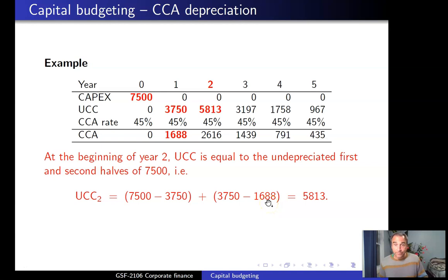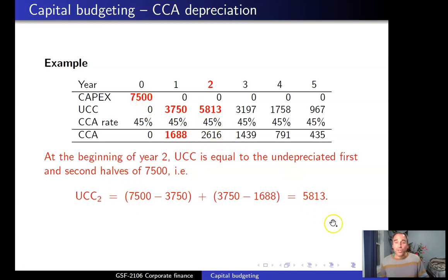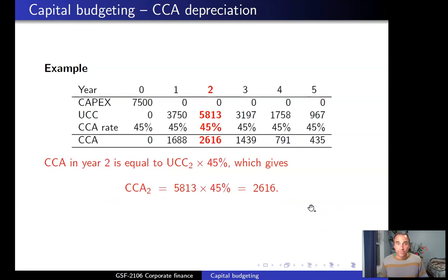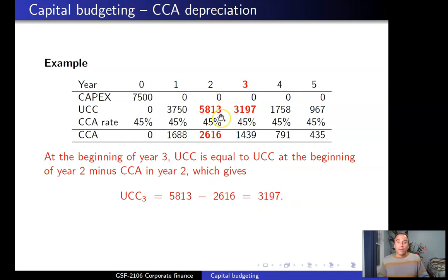In year 2, the UCC starts with $3,750 (the year 1 UCC) minus the $1,688 already used in depreciation, plus we add back the second half of the asset value purchased at time zero. So the undepreciated capital cost at the beginning of year 2 is $5,813. Applying the 45% rate gives a CCA depreciation expense of $2,616 for year 2.